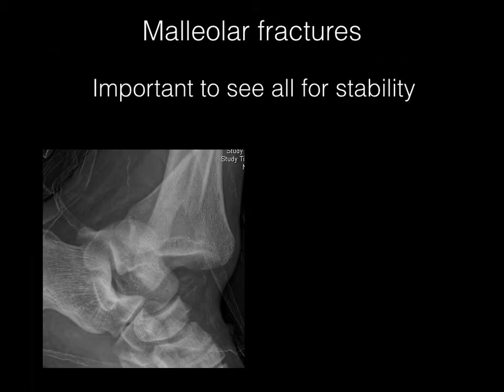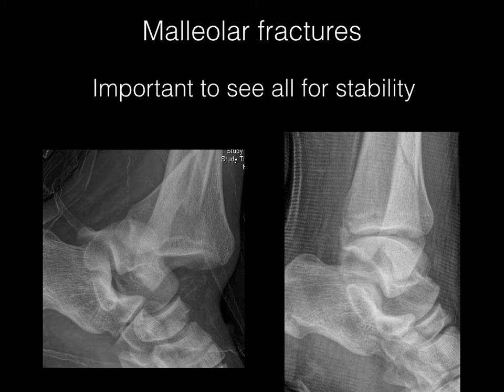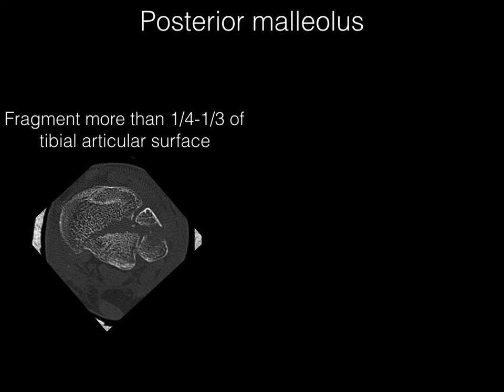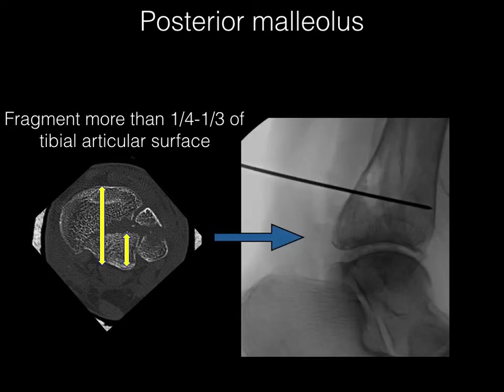Malleolar fractures are important to recognize because they have an effect on stability. In this image to the left you'll see displacement of the ankle with numerous fractures, and it's very easy to overlook a posterior malleolar fracture. The next image you'll often see is within a cast, so it's also easy to miss. If the fragment is about one quarter to one third of the tibial articular surface, that'll frequently go on to surgery, and CT is key for this.